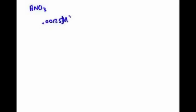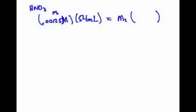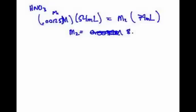For HNO3: M1 is 0.00125 molar, V1 is 54 mL. Why don't I convert to liters? Because we're adding them together in milliliters for V2, so the units cancel out. V2 is 25 plus 54 = 79 mL. So the molarity of this acid is now 8.54×10⁻⁴ molar.